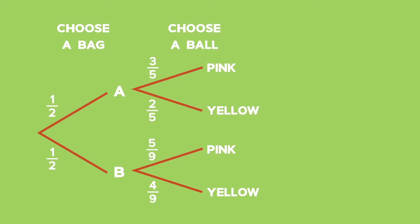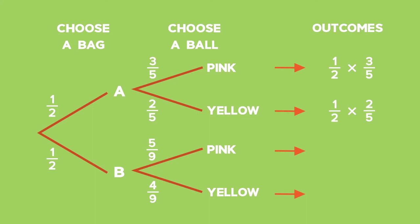Because the events are independent, we can use the product rule to determine the probabilities of the outcomes. The probability of choosing a pink ball from Bag A is 1 half times 3 fifths. The probability of choosing a yellow ball from Bag A is 1 half times 2 fifths. The probability of choosing a pink ball from Bag B is 1 half times 5 ninths. And the probability of choosing a yellow ball from Bag B is 1 half times 4 ninths.